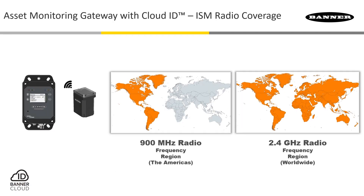The next decision to complete for the gateway is the selection of the ISM frequency used by the radio module within the devices. The radio provides the backbone of the local wireless network that you'll create as you configure these systems. A 9 in the model number will indicate 900 MHz frequency range, and a 2 indicates a 2.4 GHz frequency range.